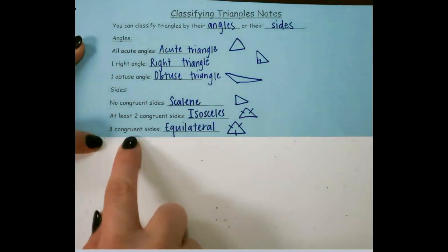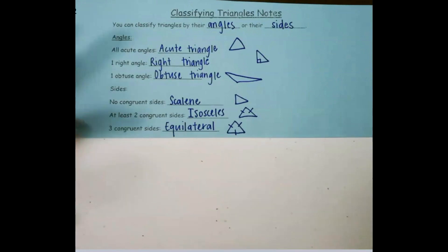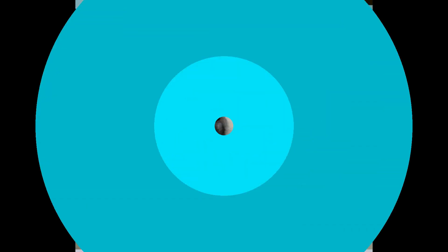And three congruent sides is equilateral, which means all sides are going to be equal. Let's go! Thank you.